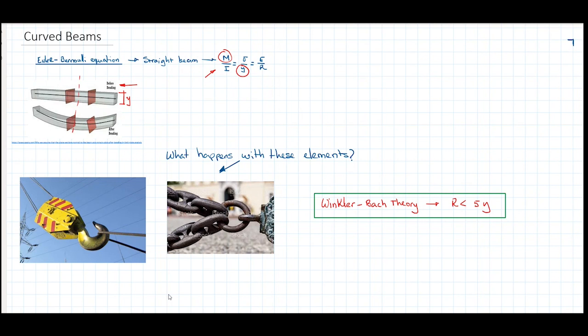If you want an indication of when to use this theory versus when to use the Euler-Bernoulli equation, basically compare the radius of curvature of the beam to the depth of the beam — meaning the height of the beam. You take the radius of curvature and compare it to that height. If a certain condition applies, it may be advisable to use Winkler-Bach theory.